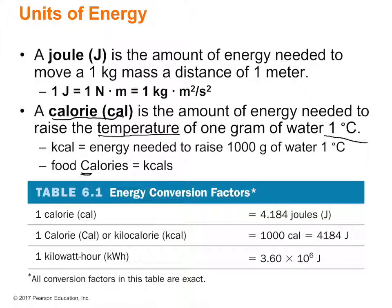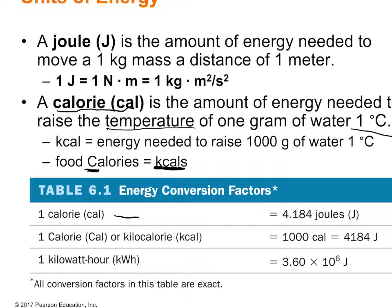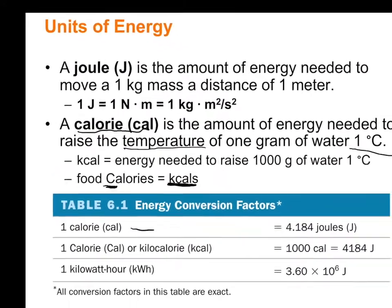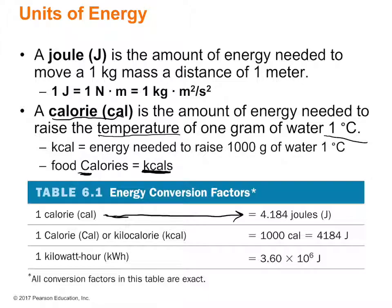The related energy unit is the nutritional, or uppercase, calorie. When you think of food calories — like the 125 calories listed on a protein bar — that actually means 125 kilocalories. So one uppercase calorie (one kilocalorie) equals 1,000 calories, which equals 4,184 joules.